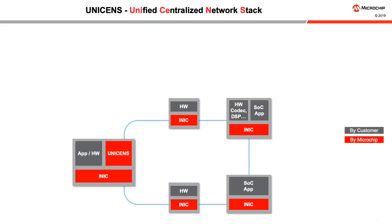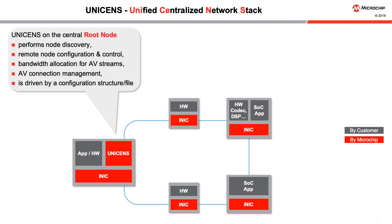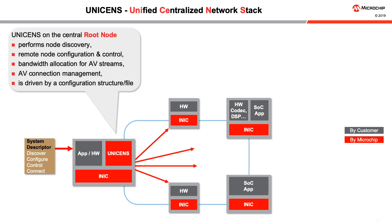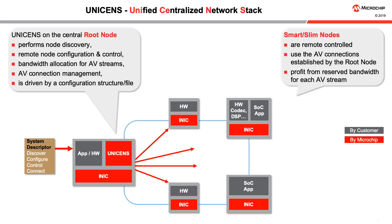Unisense is a new technology that separates application development and network management by defining a standardized abstraction layer between low-level hardware-specific software and applications. Application engineers can fully concentrate on their applications without knowing anything about the underlying physical layer. Network configuration can be done in a simplified way within record time. Unisense on the root node performs node discovery, remote node configuration and control, bandwidth allocation for AV streams, and AV connection management. Unisense is driven by a simple configuration structure called the system descriptor. It is available free of charge as a ready-made Linux app on GitHub and also as C and C++ source code. It only needs to be deployed in the central root node.